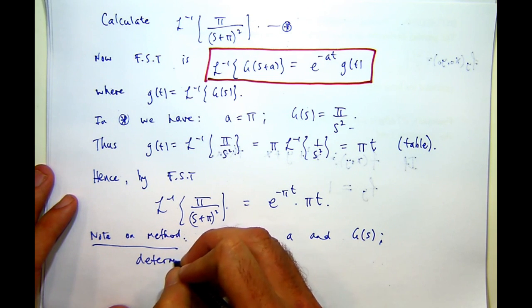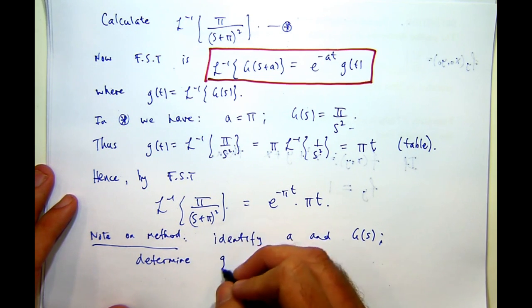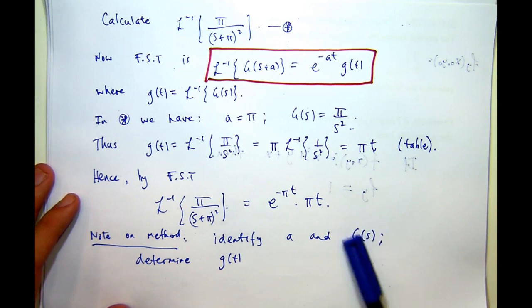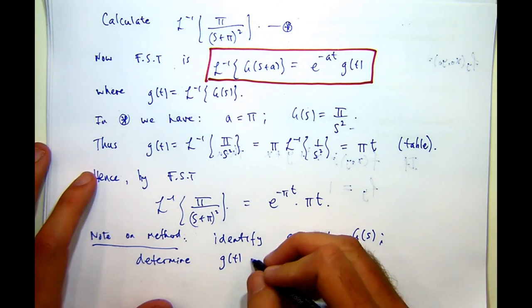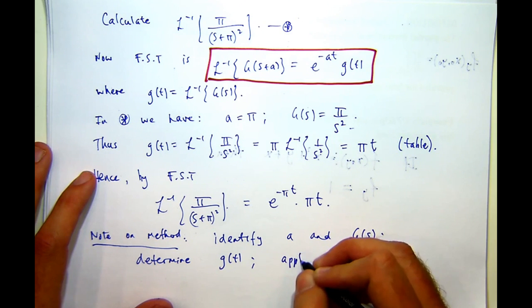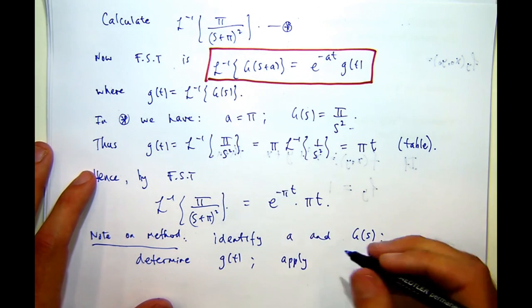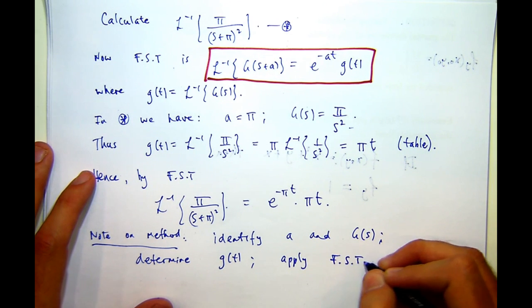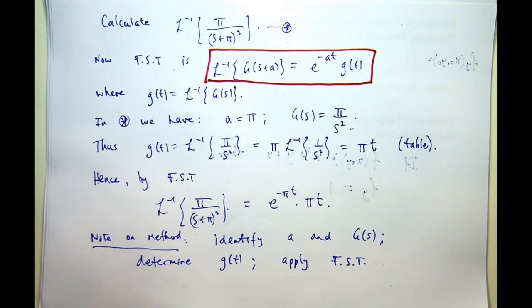The inverse transform of this, say, from a table. And lastly, we applied the FST. It's just a special product.